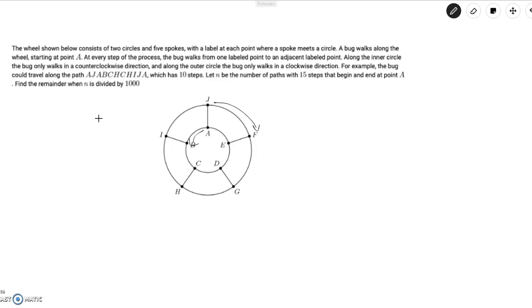the bug could travel along the path A, J, A, B, C, H, C, H, I, J, A, which has 10 steps. Let n be the number of paths with 15 steps that begin and end at point A. Find the remainder when n is divided by a thousand.